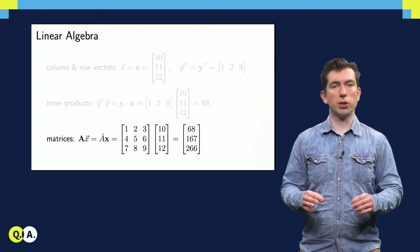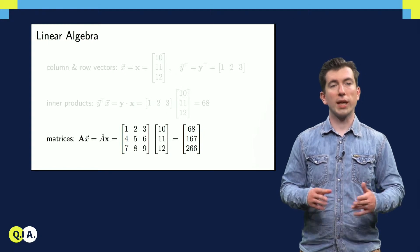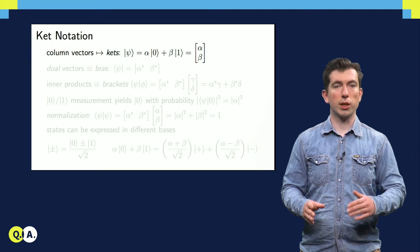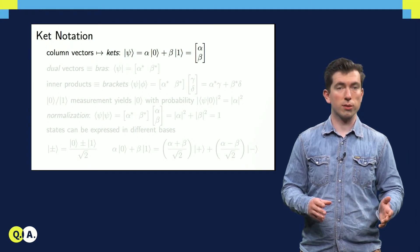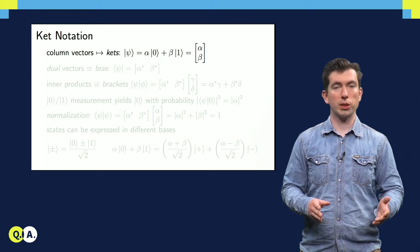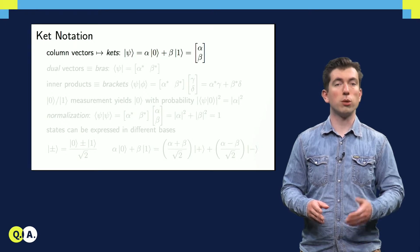There's a slightly different notation that we use for vectors and matrices in quantum computing, which we often call ket notation. In ket notation, a quantum state is expressed using a column vector with complex coefficients. For example, we can express the state of a qubit, a two-level system, as a linear combination of two basis vectors, which we call 0 and 1.